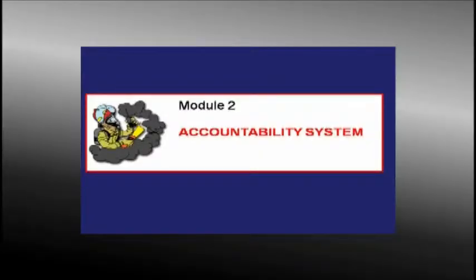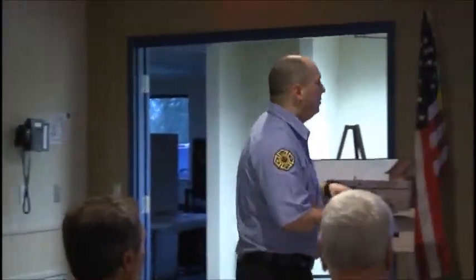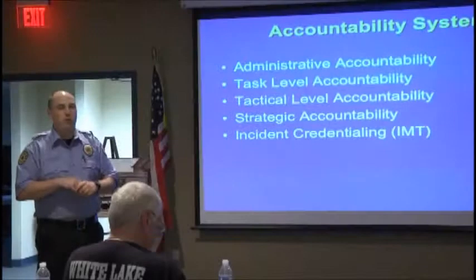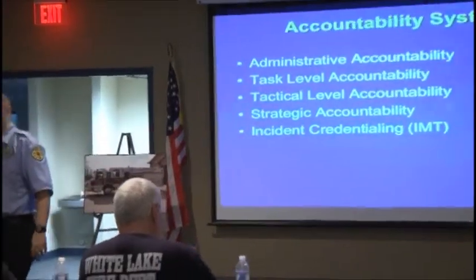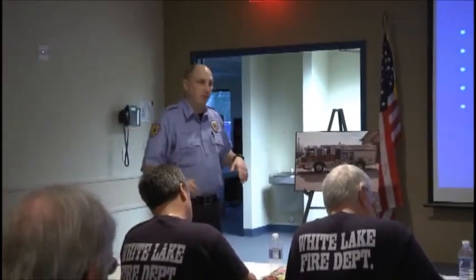The accountability pieces — you should have your bag of accountability pieces covering the various levels. The first level, administrative accountability, is optional. Some departments write down names on duty or have a board showing who's working. If you have it, call it a schedule slash accountability — that's your first level. In Independence, ours is a magnetic board with pieces set up by the day. This does not go to the scene; it's in-house. For call departments, call it your call schedule slash initial accountability.